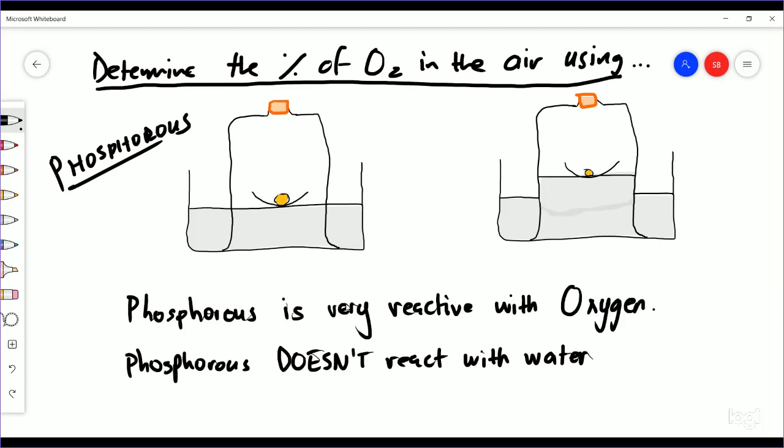But this time instead of using rust or copper, we're going to use phosphorus. Phosphorus is incredibly reactive with oxygen. It burns in this bright light and lets off this white powder. I'm going to show you a video shortly.